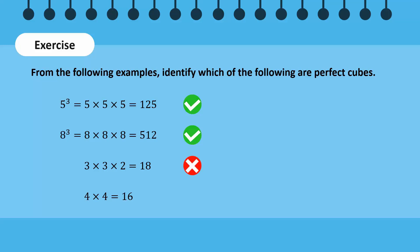18 is not a perfect cube as it is not 3 cubed. Rather, it is 3 into 3 into 2. 16 is a perfect square and not a perfect cube as it is 4 times 4 which is 4 squared.